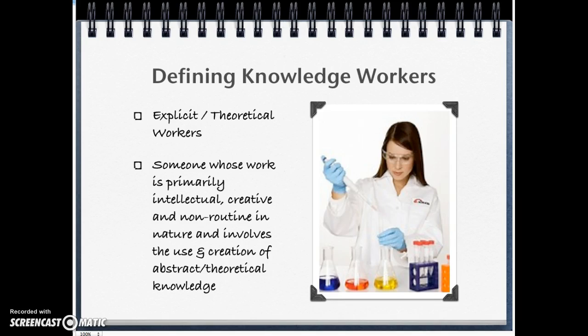The textbook breaks knowledge workers into two types. The first is the explicit or theoretical knowledge worker — someone whose work is primarily intellectual, creative, and non-routine in nature, and involves the use and creation of abstract and theoretical knowledge. Examples include lawyers, scientists, and doctors.